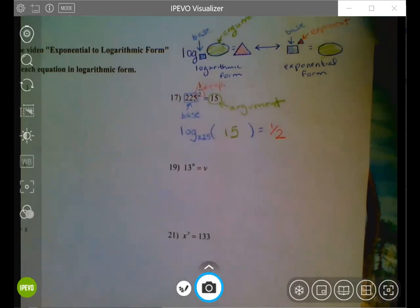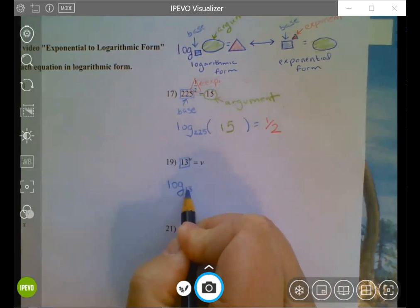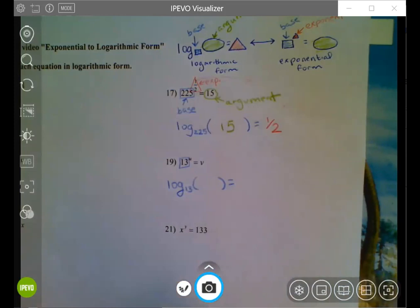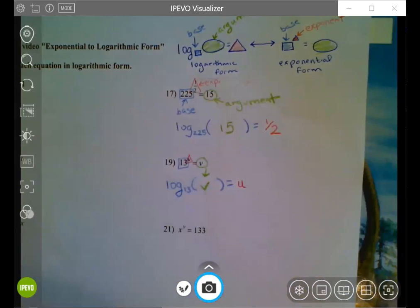All right, let's do another couple of those. So you identify the base. So I now have log base 13 of something equals something. Then I identify the exponent, and that goes to the other side of the equation. And the argument goes into my parentheses.